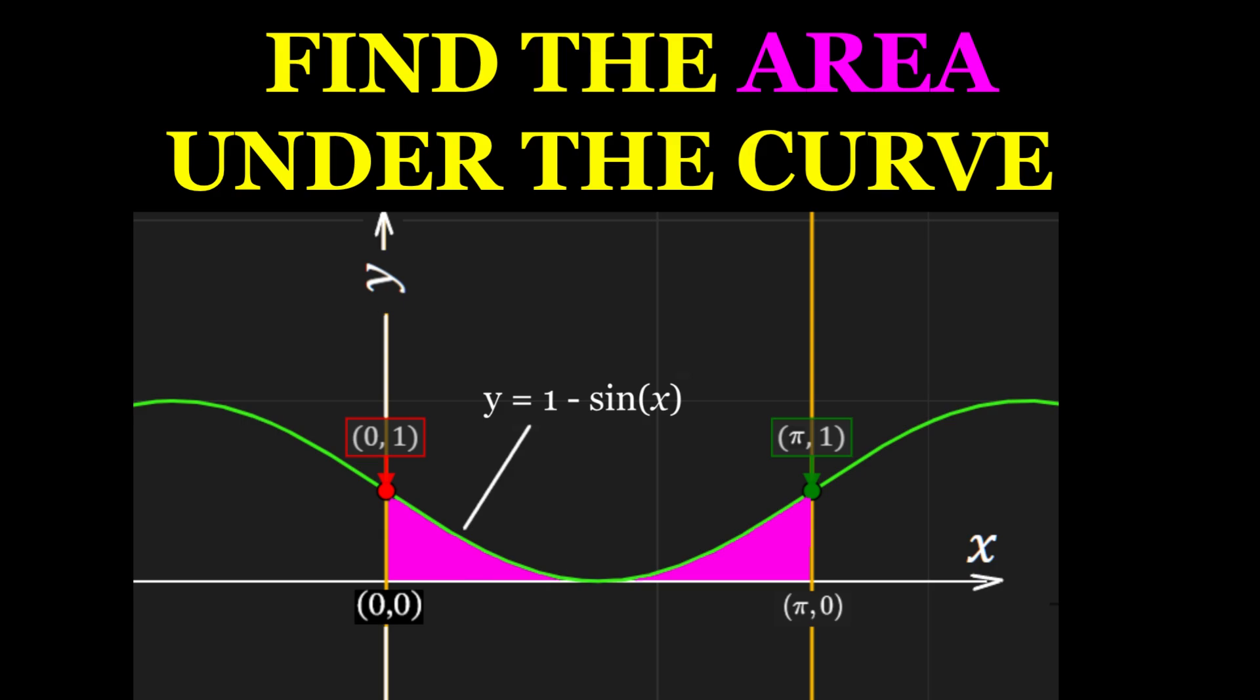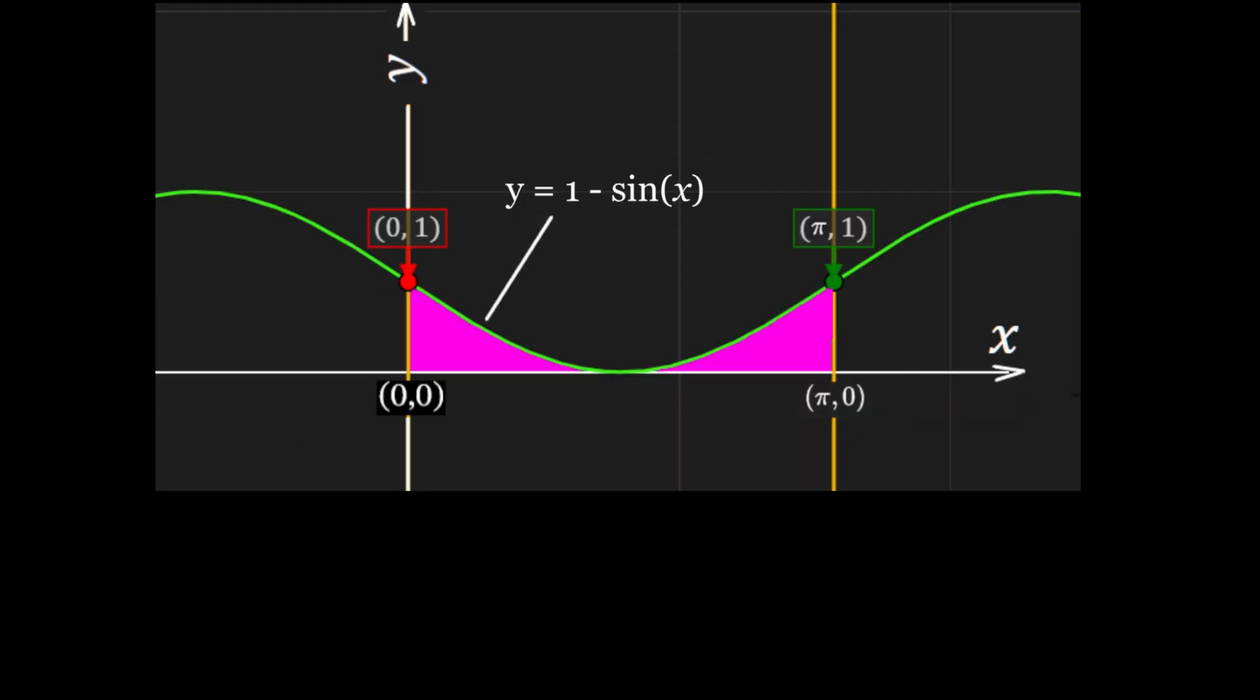On the screen, you can see the function y equals 1 minus sine of x. This green curve represents that function. Our goal is to find the magenta area under this curve between x equals 0 and x equals pi. That area is calculated by the definite integral of our function y equals 1 minus sine of x from 0 to pi.